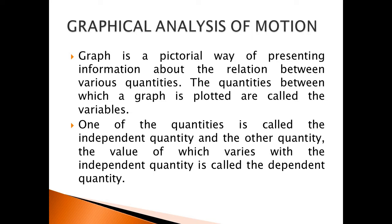The quantities between which the graph is plotted are called the variables. One of the quantities is called the independent quantity, and the other quantity — whose value varies with the independent quantity — is called the dependent quantity. The independent quantity does not depend on any other quantity, while the dependent quantity depends on the independent quantity.